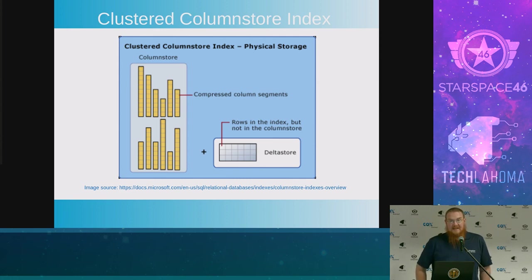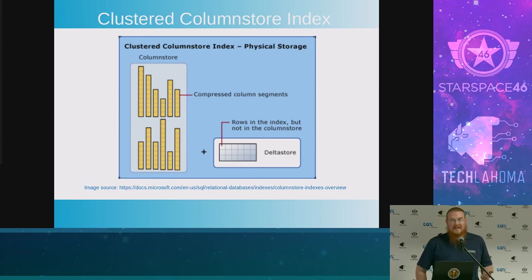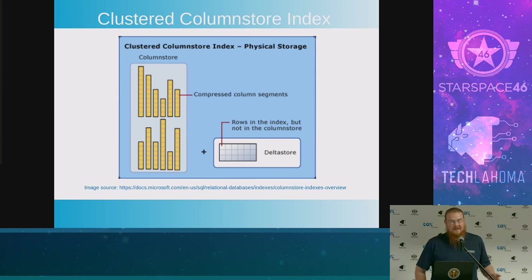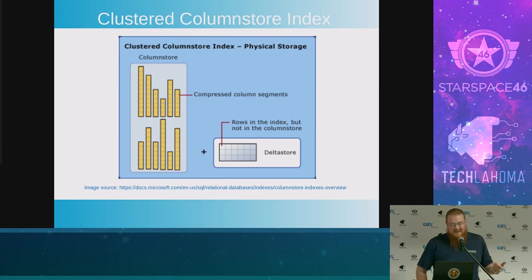The reason you do that is because when you look at a lot of columns, you'll see repeating data. So let's say you're storing your state — you should probably only see about 50 of those. That gives you a real opportunity to compress that data. So instead of storing 'Oklahoma', you can replace that with the number one. Microsoft says they generally see about a 10x reduction in data size.